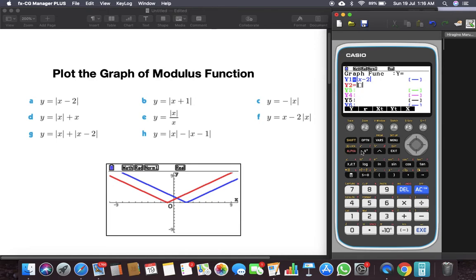Now we can easily type in any function, for instance x plus 1, hit execute, and you can put F6 or you can hit execute once again. And see, we have both the graphs on the same screen.